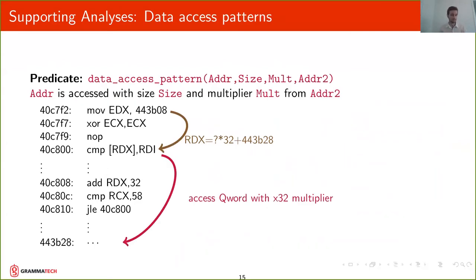And this is going to be useful for our last supporting analysis, which is the data access pattern analysis. The data access pattern analysis is going to generate predicates that tell us that an address is being accessed with a size and a multiplier from some other address. So in this case, we will conclude that this address at the bottom is accessed with QWORD size and with a 32 multiplier. And this is going to be useful because that tells us that that address probably holds a data element of size QWORD and that gives us clues of whether that can be a pointer or not. In this case, QWORD is more likely to be a pointer given that x64 has eight-byte pointers.